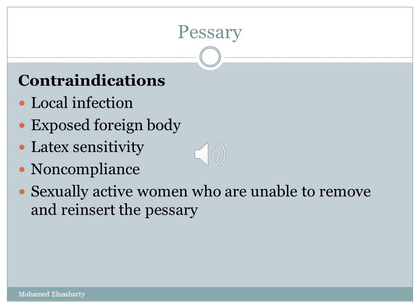The pessary is one of the most common conservative measures used in pelvic organ prolapse. It has the advantage of being reversible and non-invasive, and patients can try it for some time before deciding on surgery. Contraindications include local infection, exposed foreign body, latex sensitivity, non-compliance, or being a sexually active woman who is unable to remove and reinsert the pessary. We usually teach women how to remove and reinsert the pessary during sexual activity, but some women are still unable to do this, and in that case the pessary is contraindicated.